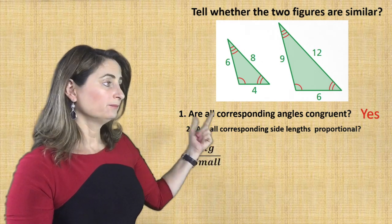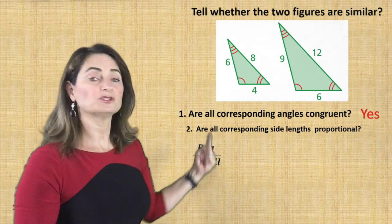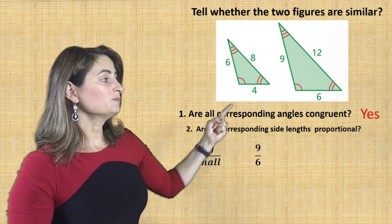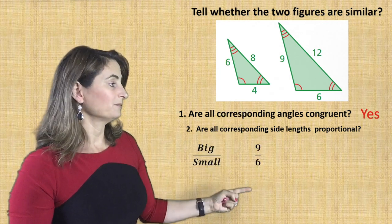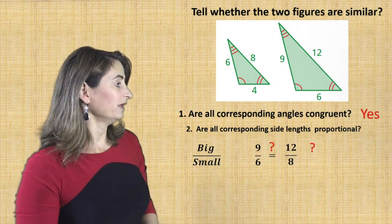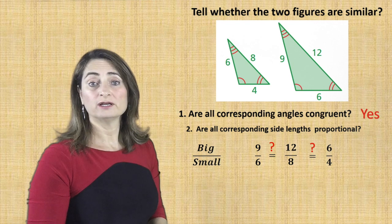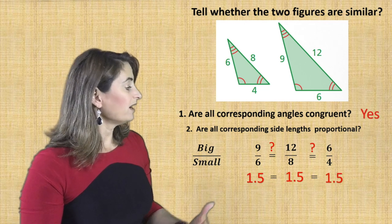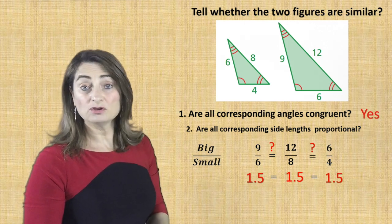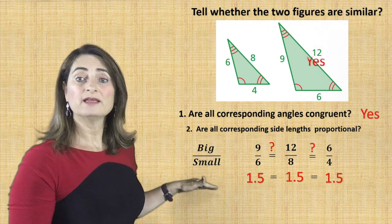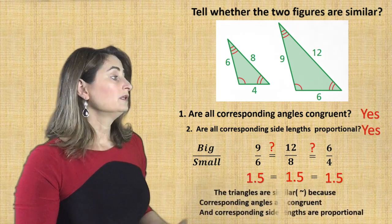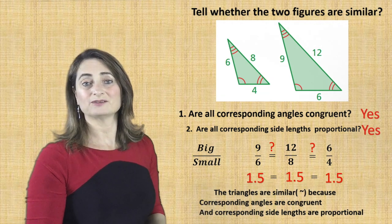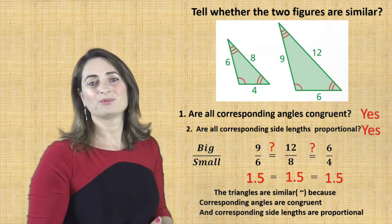Set up your ratio big to small — you can also do small to big, it doesn't matter, but stick to it. Side 9 corresponds with side 6, so the length is 9 divided by 6. Does it equal 12 over 8? Does it equal 6 over 4? 9 divided by 6 is 1.5, and 12 divided by 8 is 1.5, and 6 divided by 4 is also 1.5 — so they are equal ratios. That means the side lengths are proportional. Therefore, I can conclude the triangles are similar because all corresponding angles are congruent and all side lengths are proportional.